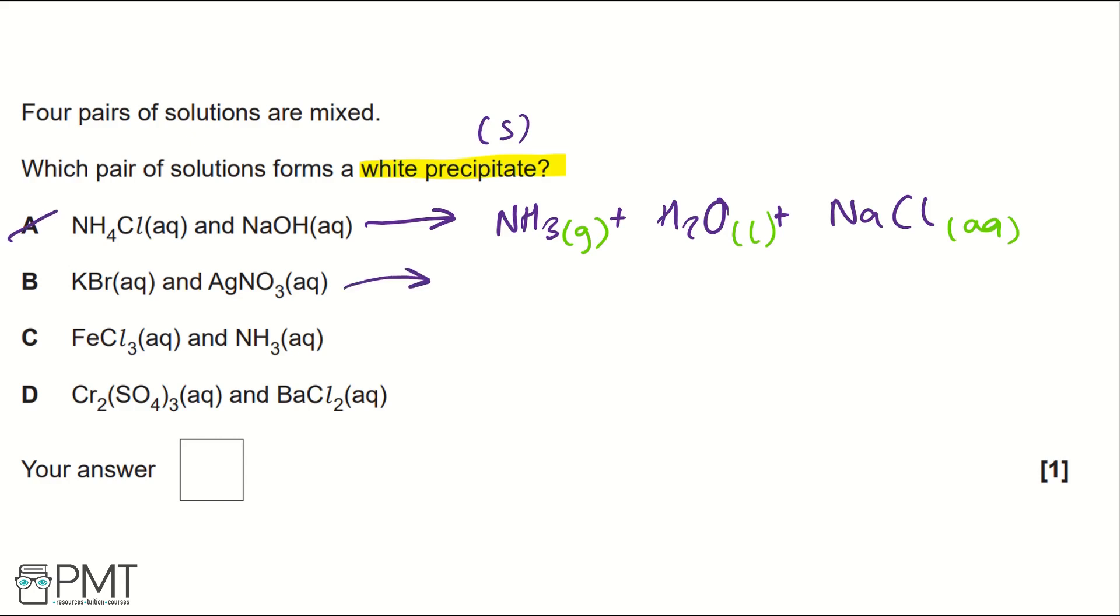Moving on to B, we would form silver bromide and potassium nitrate. Potassium nitrate is an aqueous solution, and silver bromide is a solid,